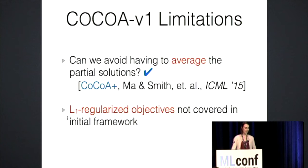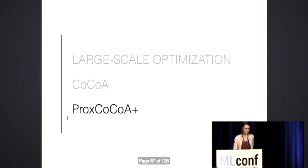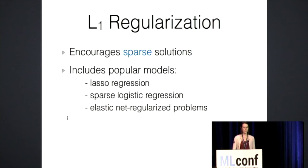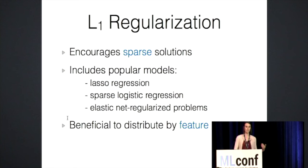But since then, there was one other limitation to the framework, which is that L1 regularized objectives were not covered in our initial framework. So what is that? Why is that important? I'm going to be talking about that now because this is very recent work. So in particular, L1 regularization. Why is this important? It encourages sparse solutions. So it's very important for the setting where your feature size might be large. And you'd like a model at the end that is small either for computational reasons or for interpretability reasons. So you might want to be able to interpret the features that you have in your final model. So it includes popular models like lasso, sparse logistic regression, elastic net regularized problems. But something that's important to consider and that we considered when thinking about how to use this in the CoCoA setup is that often you're using L1 regularization because you have a very large feature size. And in this setting, it can be beneficial to actually distribute your data by feature rather than by data point, which is what we had assumed in the original CoCoA framework.